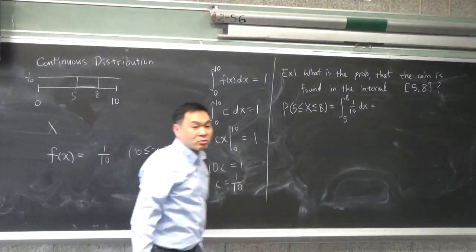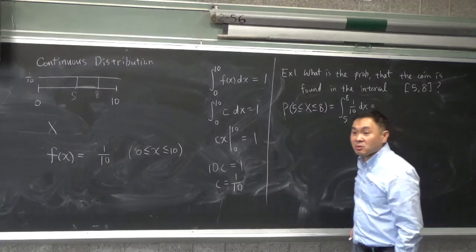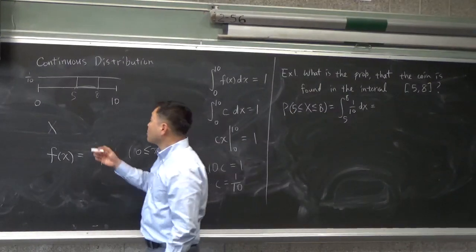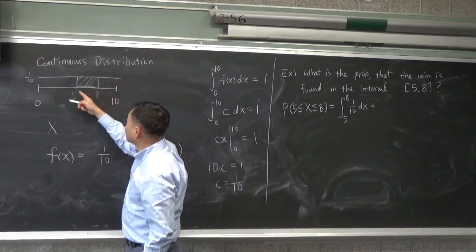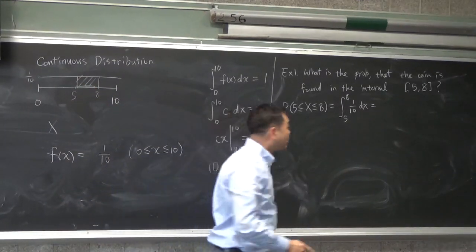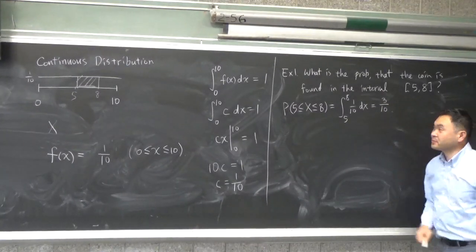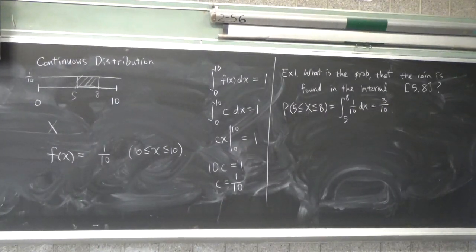And we've learned in calculus 2 that the integration calculates the area under the curve. You know that, right? So it's this area, this base length is 3. Height is 1 tenth. Therefore, the integral is 3 tenths.